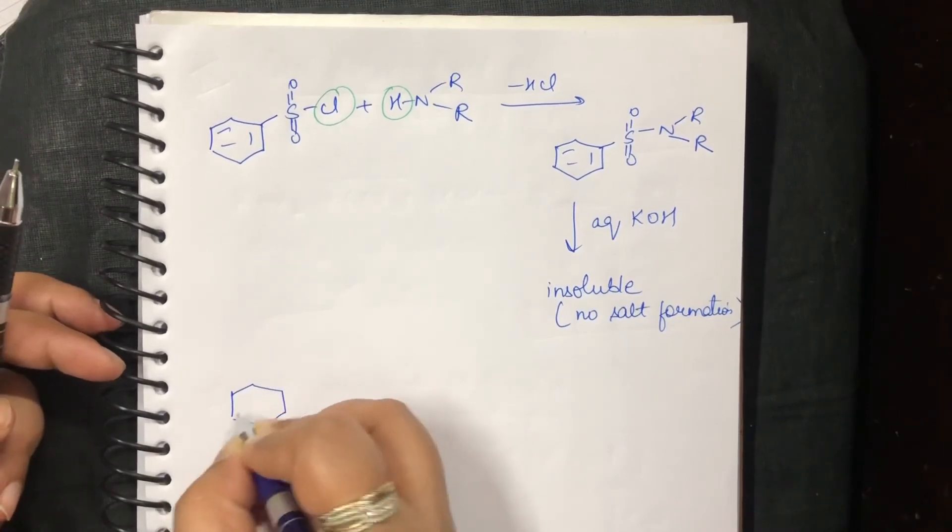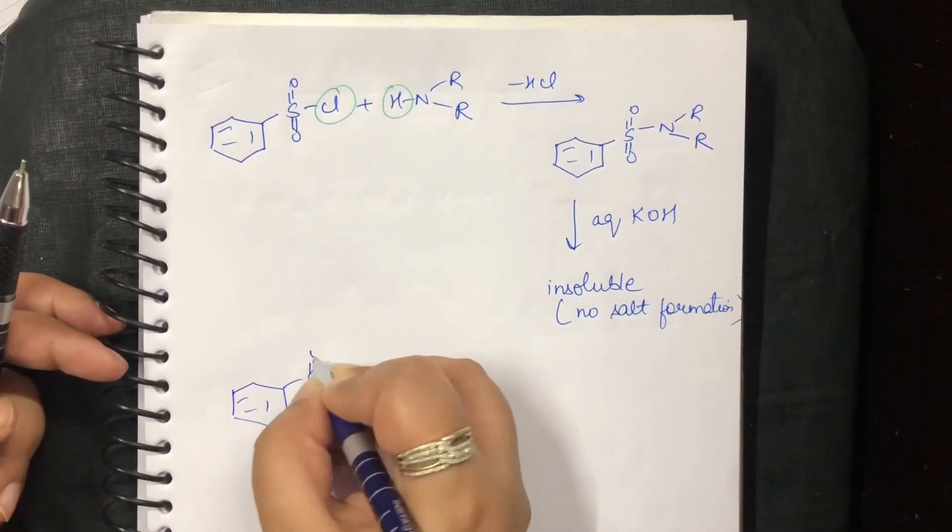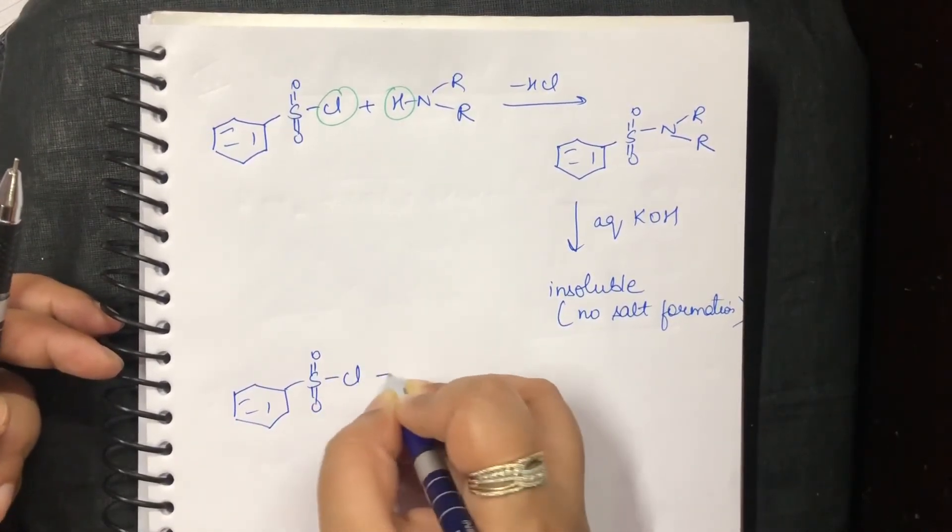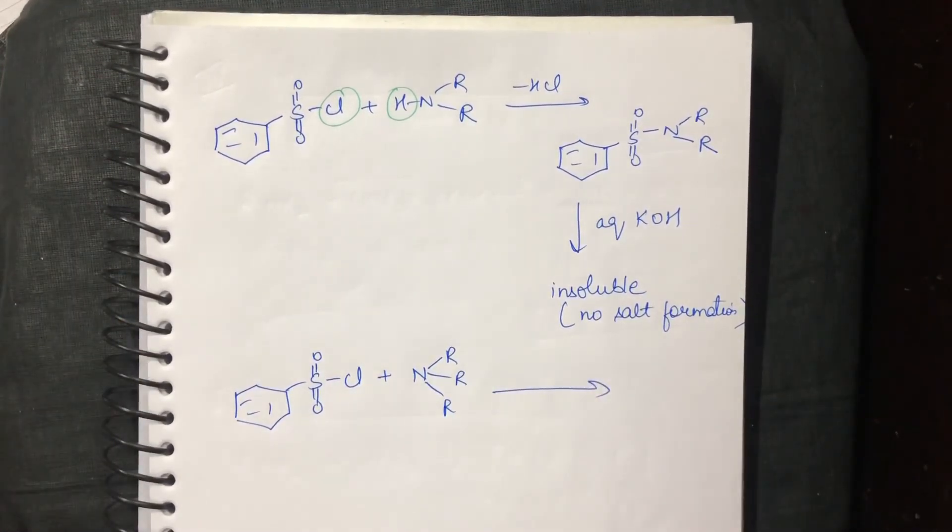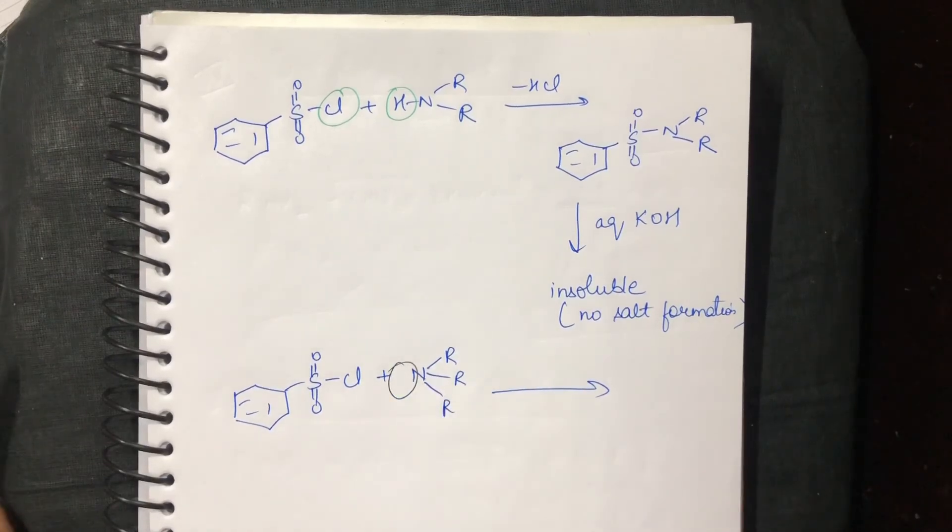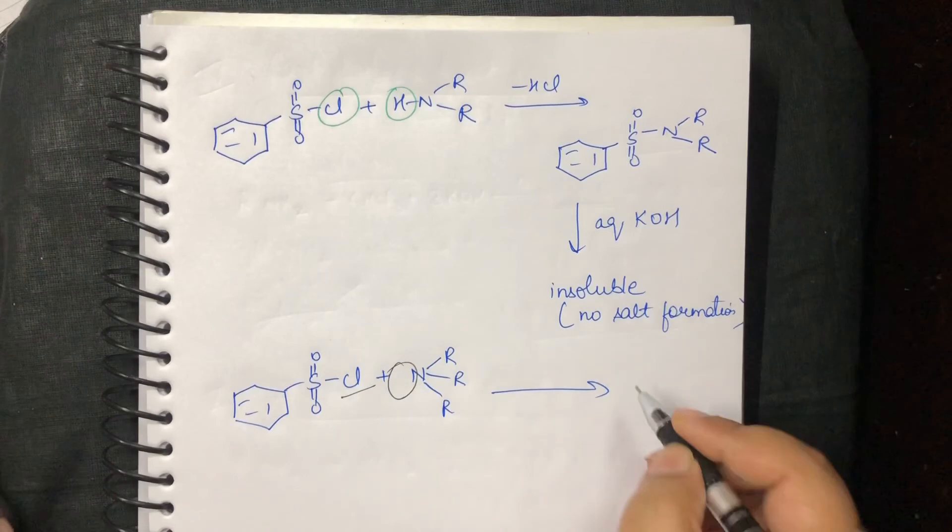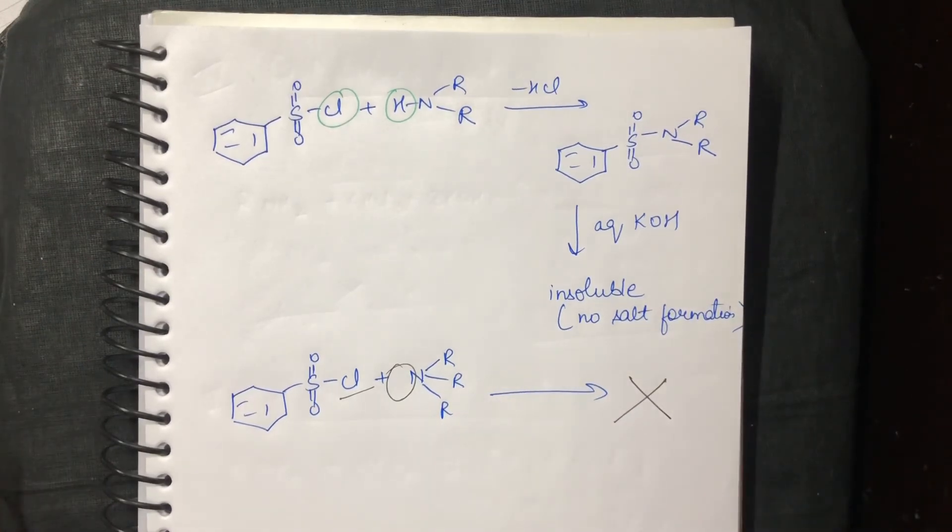Now, what will happen if I do it with a tertiary amine? Now, there is no hydrogen here to be lost. So, this chlorine is not going anywhere. So, there is going to be no reaction.